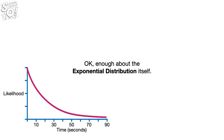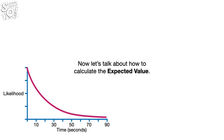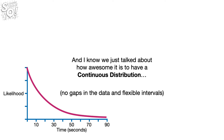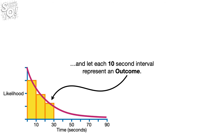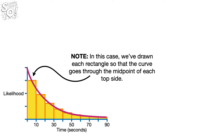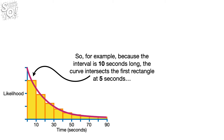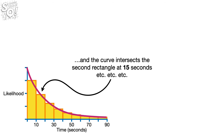Enough about the exponential distribution itself — now let's talk about how to calculate the expected value. For a few minutes, let's pretend this is actually a discrete distribution, and let each 10-second interval represent an outcome. Each rectangle is drawn so that the curve goes through the midpoint of each top side. Because the interval is 10 seconds long, the curve intersects the first rectangle at 5 seconds, the second rectangle at 15 seconds, et cetera.